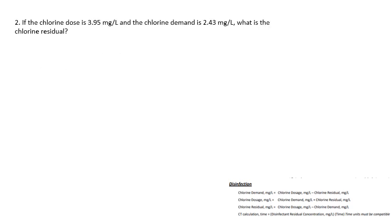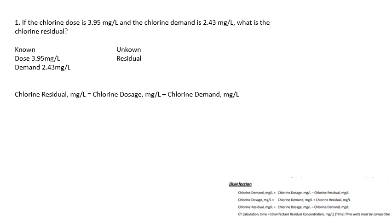Question two: if the chlorine dose is 3.95 mg/L and the chlorine demand is 2.43 mg/L, what is the chlorine residual? The dose is 3.95 mg/L, the demand is 2.43 mg/L, and the unknown is the residual. Chlorine residual equals chlorine dosage minus chlorine demand: 3.95 minus 2.43. That's the chlorine you put in minus what got used, leaving a residual of 1.52 mg/L.